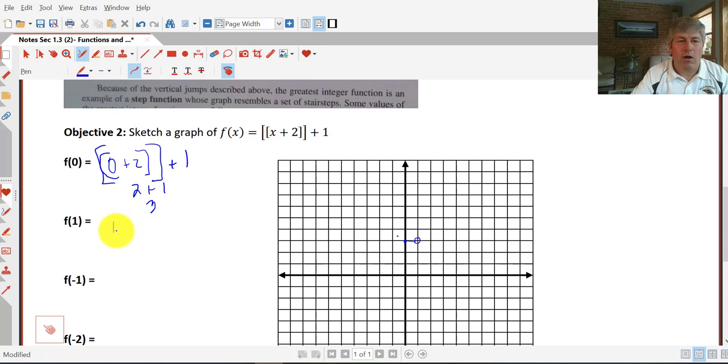At f(1), we have 1 plus 2 plus another 1, so 3 plus 1. We get an output of 4. For all our inputs from 1 to 2, we have that as our graph.